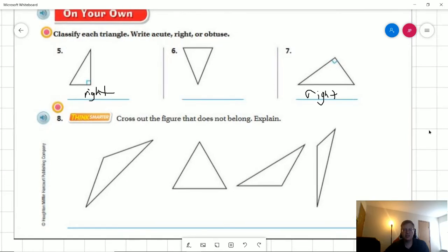Number eight, so the only one, if you were trying this one at home, think about which one might not work. If you need to pause the video, go ahead and do that. And it would be this one. So this one has three acute angles. Every other one has at least one obtuse angle. So our obtuse angles would be here, here, and here.